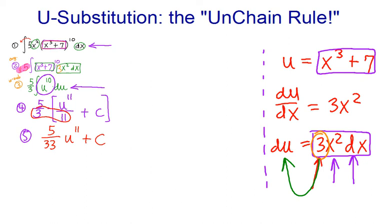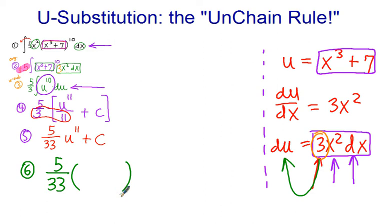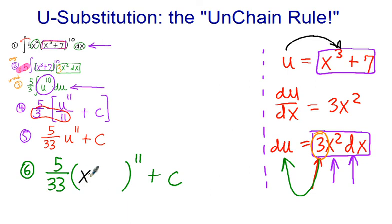We're going to send u home and bring x back into the picture. U to the eleventh power — u was just a stuntman, now we're bringing back the real actor. So what did u stand for again? It was x to the third power plus seven. So go ahead and write that in.